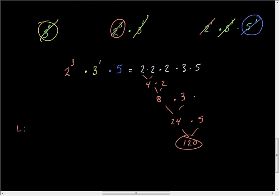So the least common multiple of 3, 24, and 30, not 40, 30, is 120. That's the answer.